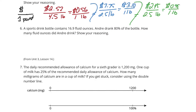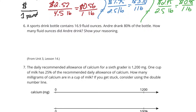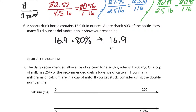Question 6: a sports drink bottle contains 16.9 fluid ounces. Andre drank 80% of the bottle. How many fluid ounces did Andre drink? We'll take our 16.9 ounces and multiply it by 80%. That means we're going to take 16.9 and multiply it by the decimal 0.8 — 8 tenths.